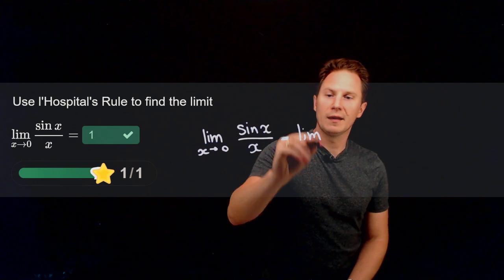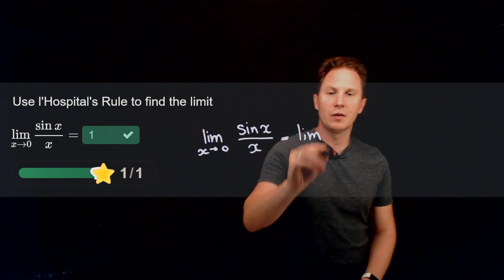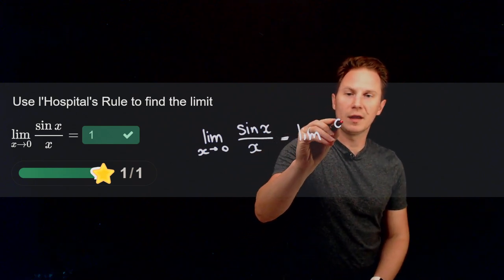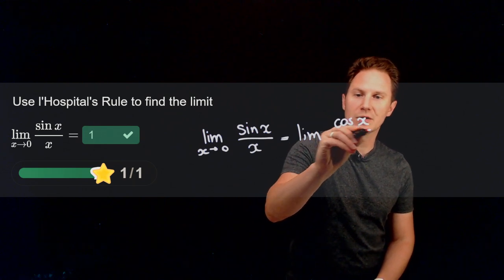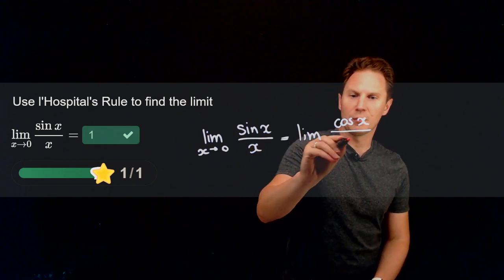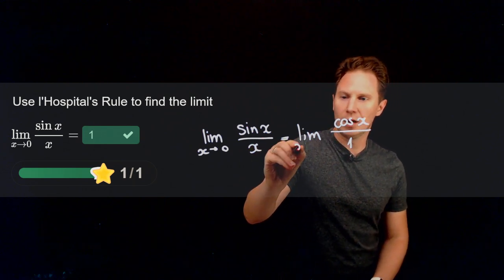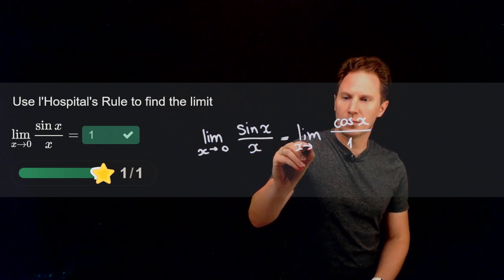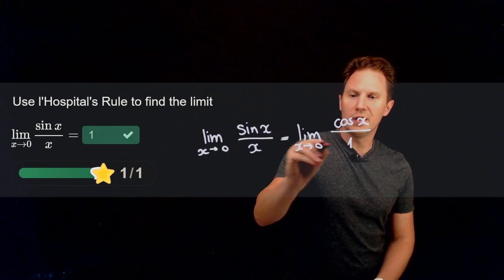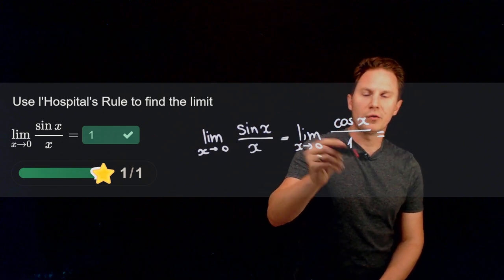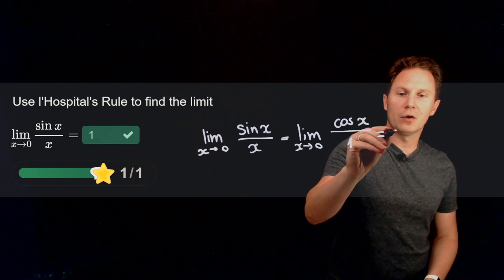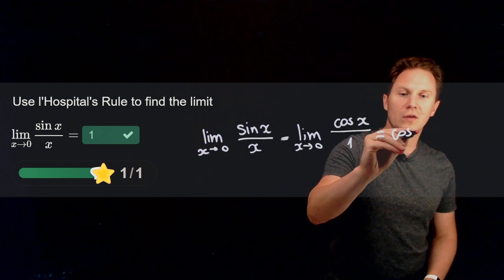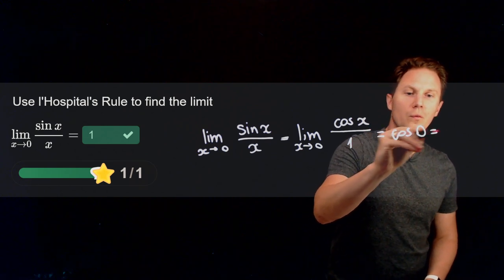If we take the quotient of the derivatives, the derivative of the sine function is the cosine function, and the derivative of x is equal to one. So as x approaches zero, the cosine of x approaches cosine of zero, which is equal to one.